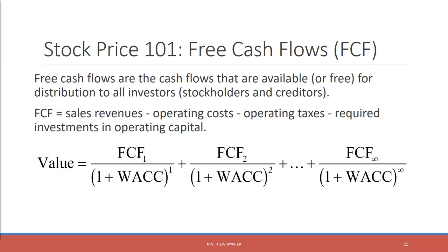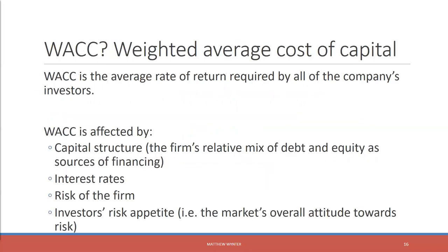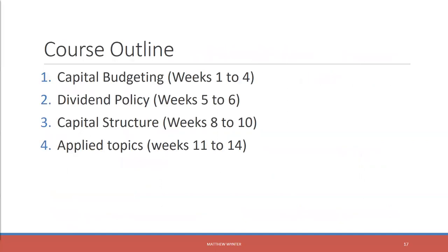Those future cash flows happen across different time periods — FCF1, FCF2, all the way to infinity — and with each time period we're discounting by the weighted average cost of capital, or WACC. That WACC in the denominator can be affected by how the firm mixes its debt and equity and what interest rates are. If interest rates are high, all things held equal, investors might want a higher WACC. How risky is the firm? If we're very risky, investors are going to want a large return — a higher cost of capital. And risk aversion and risk appetite will also affect our cost of capital.